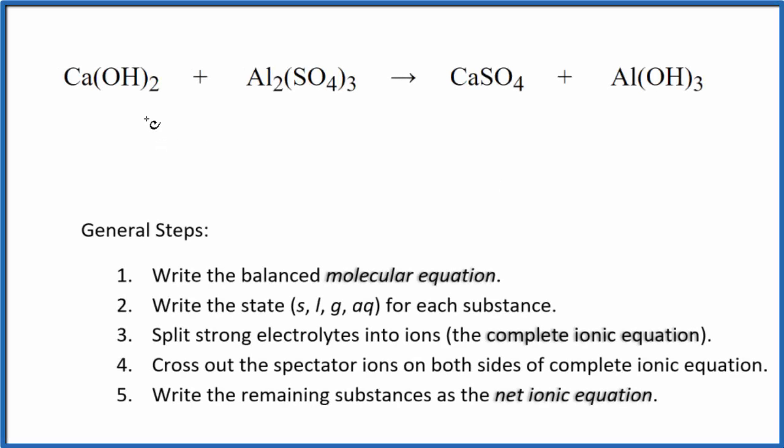In this video, we'll balance the net ionic equation for Ca(OH)2 plus Al2(SO4)3. This is calcium hydroxide, and this is aluminum sulfate.